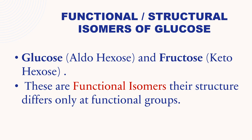Functional or structural isomers of glucose. Glucose, also known as aldohexose, and fructose, also known as ketohexose, are functional isomers. Their structures differ only at the functional groups — that is, either at the keto group or at the aldo group.